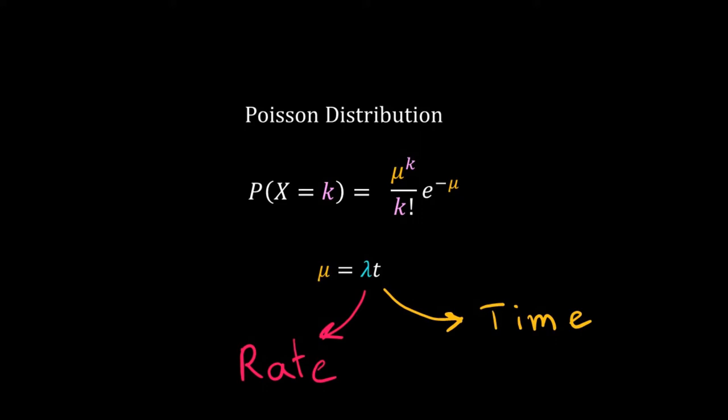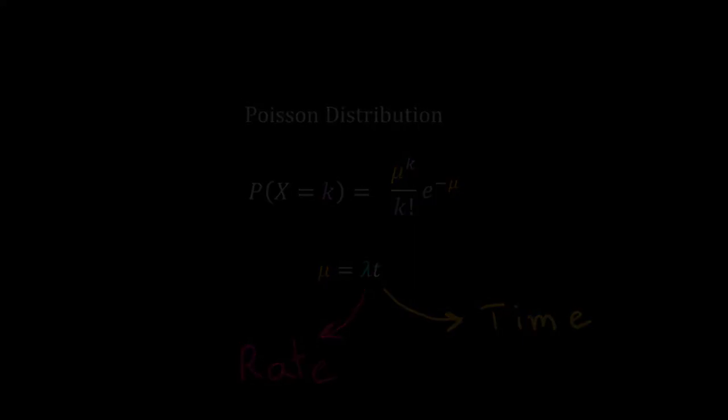So in our simplified model, the probability distribution of the number of mRNAs produced in an interval follows the Poisson distribution. Many other dynamical processes have this property. All such processes are called Poisson processes. We will study the properties of Poisson processes. For that we need some technical definitions.